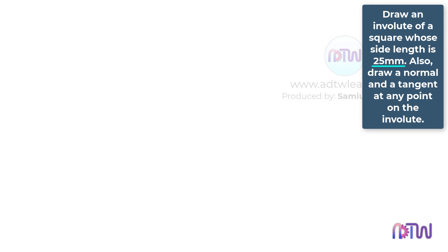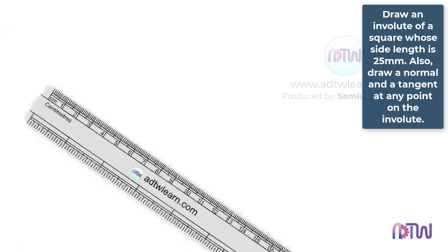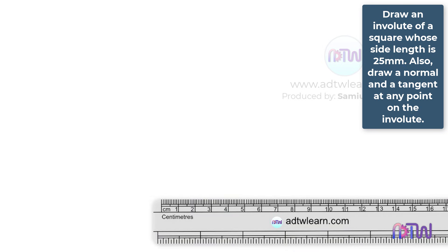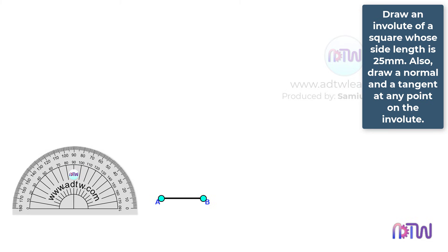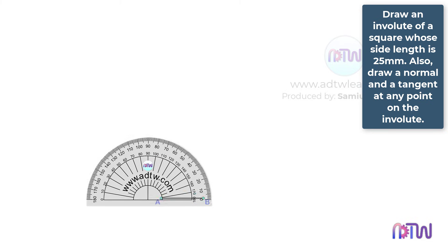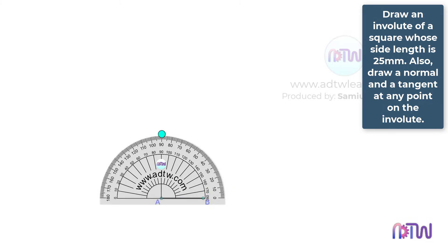We will have to draw a square whose side length is 25 mm. Take a ruler and draw a horizontal line of 25 mm in length. Mark these endpoints as A and B. Take a protractor and keep it at these points, and mark a point at 90 degrees.